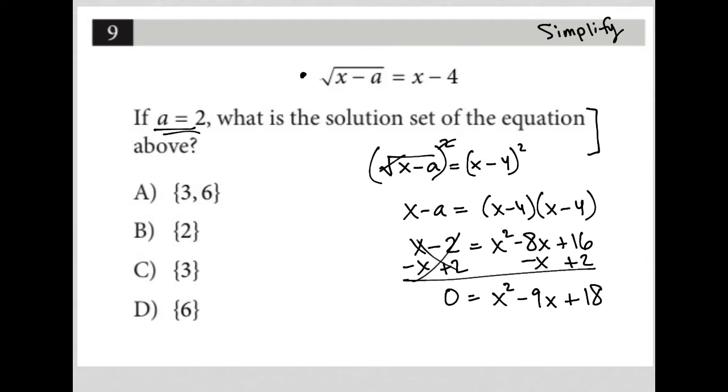To factor this trinomial, I'm going to set up a product of my binomials. I factor this by just throwing an x here and here, and then I ask, what are the two numbers that multiply to equal positive 18 but add up to negative 9? Those numbers are negative 3 and negative 6.